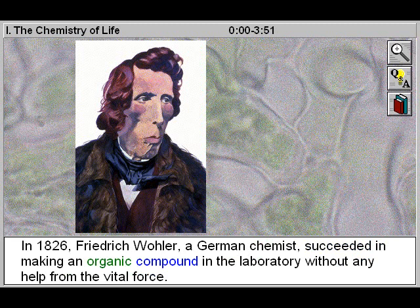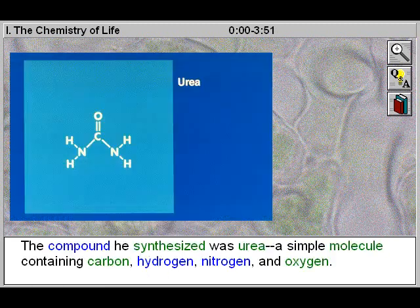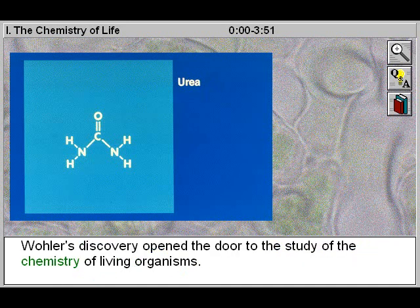In 1826, Friedrich Wöhler, a German chemist, succeeded in making an organic compound in the laboratory without any help from the vital force. The compound he synthesized was urea, a simple molecule containing carbon, hydrogen, nitrogen, and oxygen.